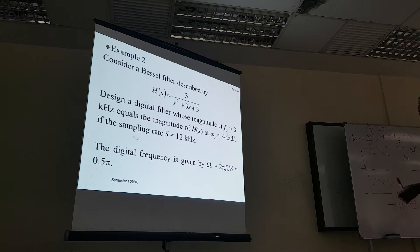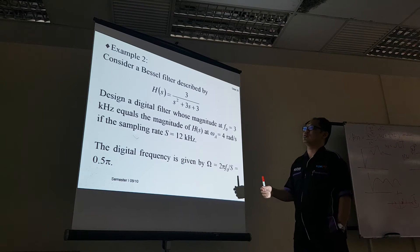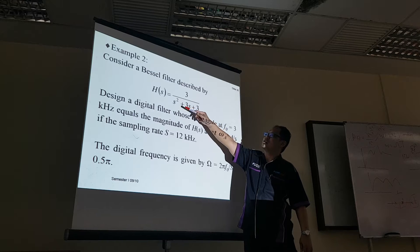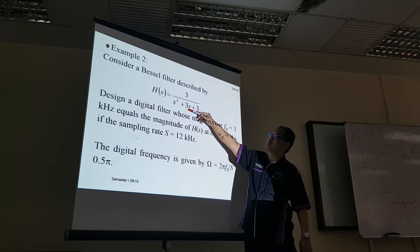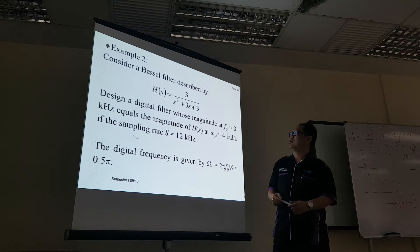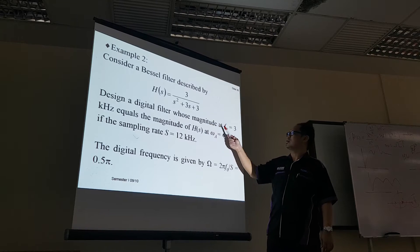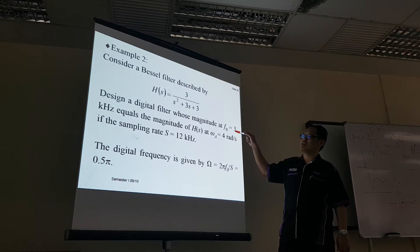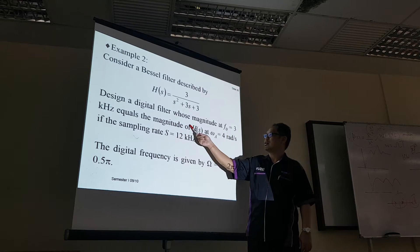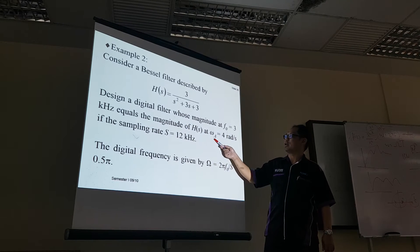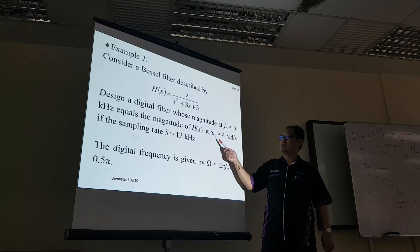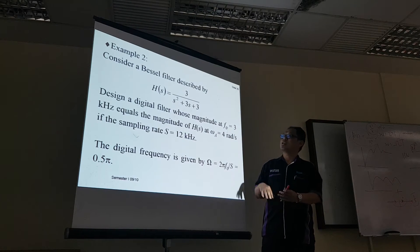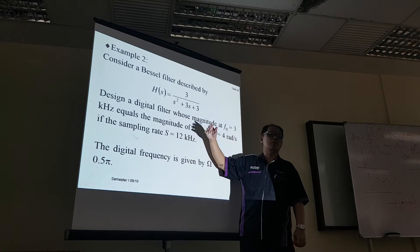I'll show you a numerical example using both methods. Assume the given filter is H(S) = 3/(S²+3S+3), with a cut-off frequency F0 = 3 kHz. The analog filter has Ω_A = 4 radians, and the sampling rate Fs = 12 kHz. Sometimes the sampling period Ts is given instead, so remember Fs = 1/Ts.